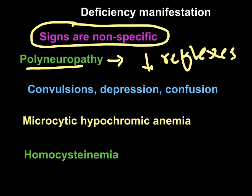Vitamin B6 deficiency can also cause convulsions, depression, and confusion, all due to alterations in neurotransmitter synthesis. Since decarboxylases that produce most neurotransmitters from amino acids need pyridoxal phosphate, a deficiency disrupts neurotransmitter synthesis and leads to these central nervous system signs.